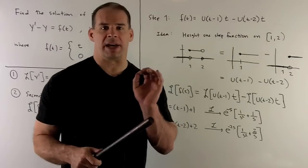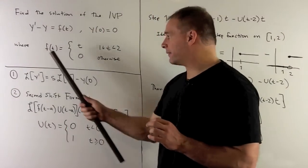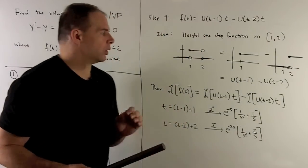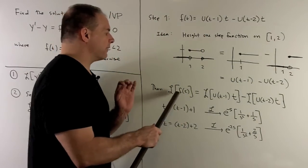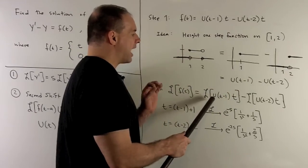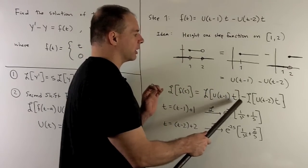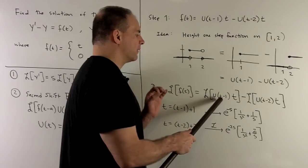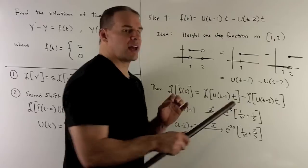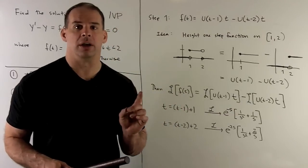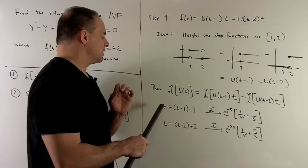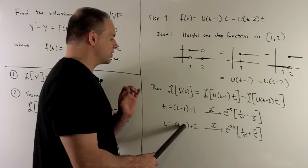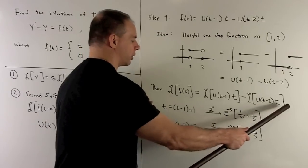That's our formula for the height-one step function on the interval from one to two. Now we just multiply by t to recover f of t. To use the second shift formula, we have to write t as a function of the shifted variables: t as t minus one plus one, and t as t minus two plus two for the other term.